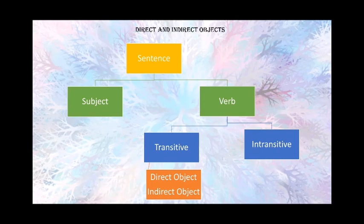In order to know what is direct and indirect object, we first need to understand what a sentence is. A sentence is a group of words arranged in an order to make a sensible sentence. If a sentence is incomplete, we feel that there is something missing. A sentence always consists of a subject and a verb. The verb which is present in the sentence may be transitive or an intransitive verb.